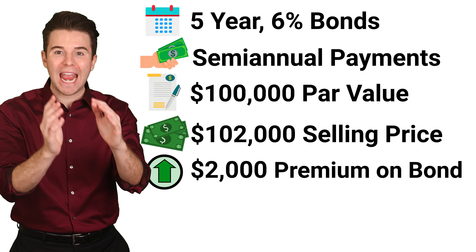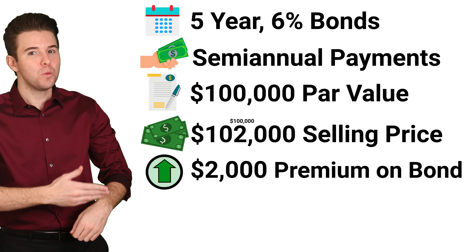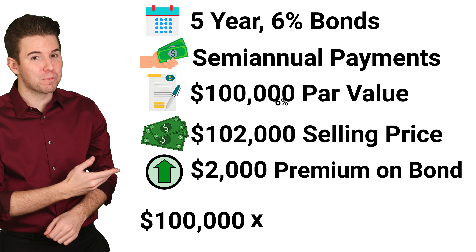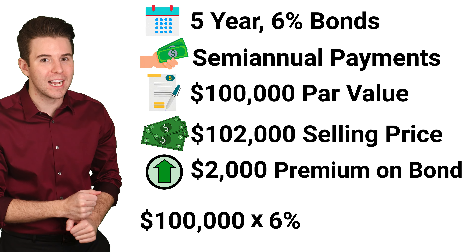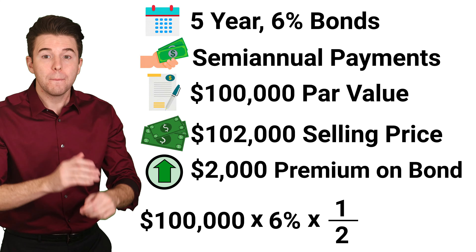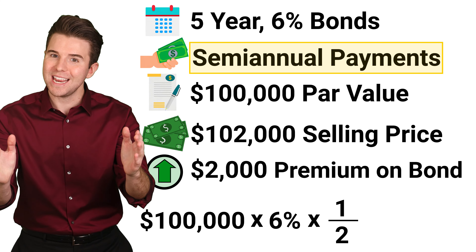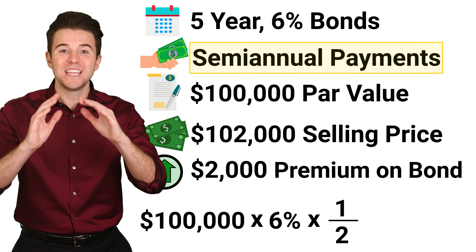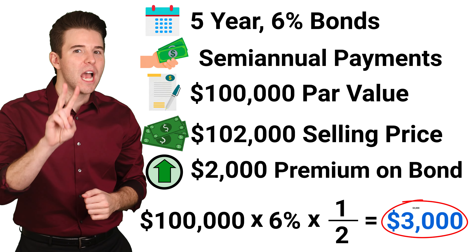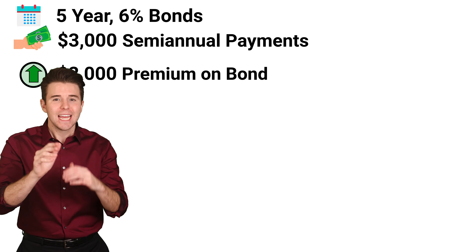Next, we want to compute the semi-annual interest payments. We take the $100,000 par value, multiply it by the 6% annual contract rate, and multiply that by 1/2 because these are semi-annual interest payments, meaning twice per year. This results in $3,000 interest payments twice per year for the next 5 years.